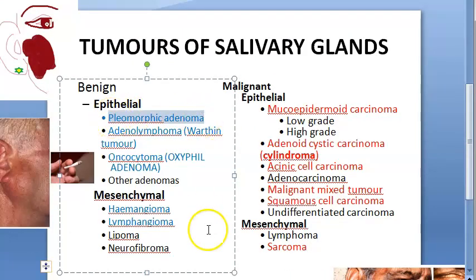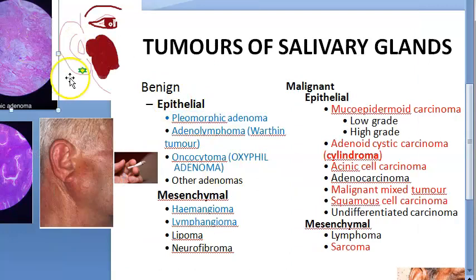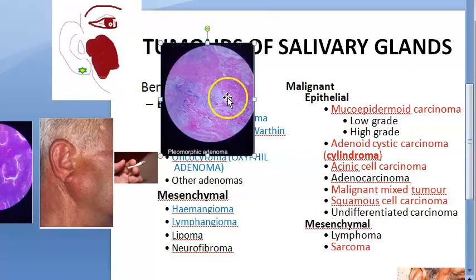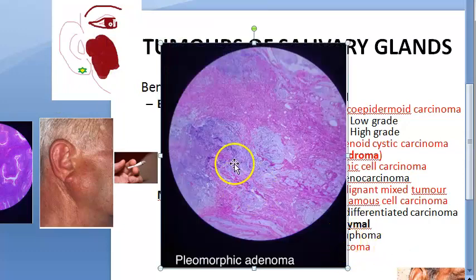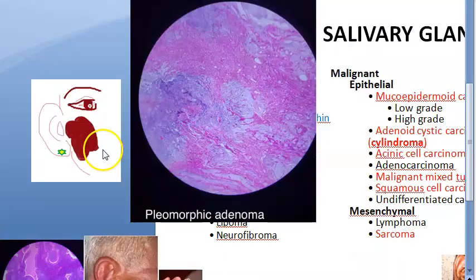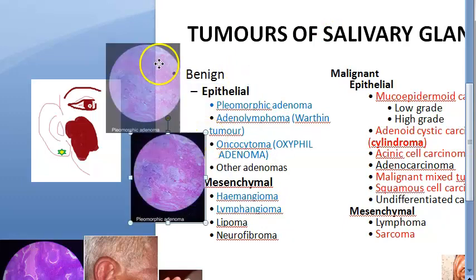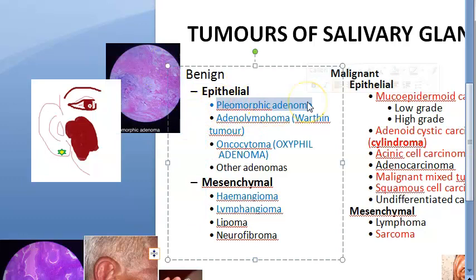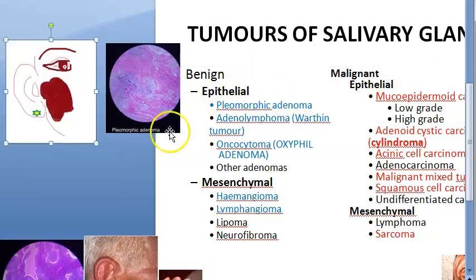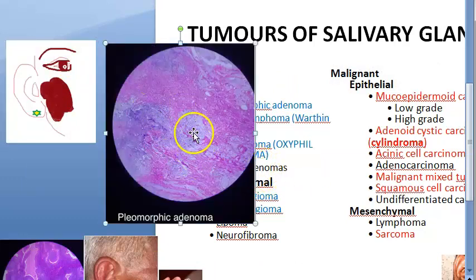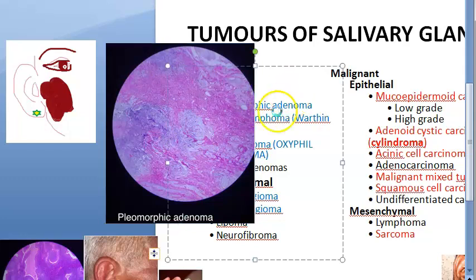Let us look at pleomorphic adenoma. Looking at the histology image, you can see a pink and blue pattern. It is the most common benign tumor of salivary glands and usually affects the parotid. What is unique about it is that it is a mixed tumor — it has both epithelial and mesenchymal elements, not just epithelial.